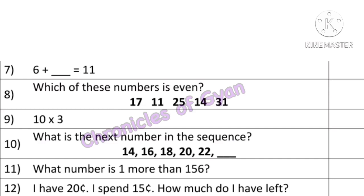Among the 5 given numbers, let's check the last digit. 17 — is it divided by 2? No. 11 — is it divided by 2? No. 25 — no. 14 — yes, it is divided by 2. 31 — no, it is not divided by 2. Hence, the correct answer is 14.